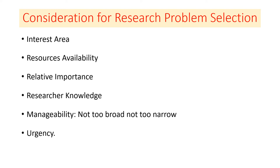The second consideration is resource availability. The availability of resources is essential because while we are carrying out the research, it needs resources — for example, money to collect data, our time and effort, accommodation and transport to collect primary data from the sources. So we have to keep in mind that all the required resources for the research problem are available.